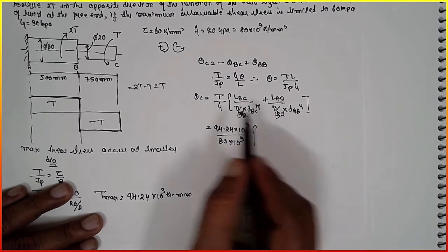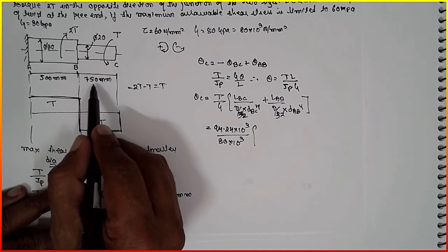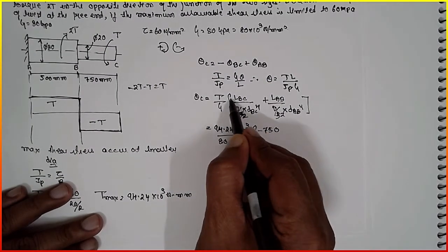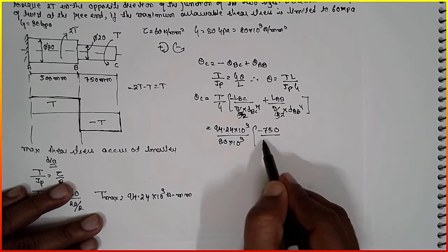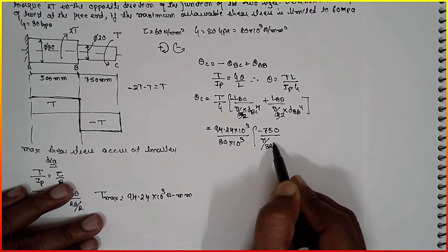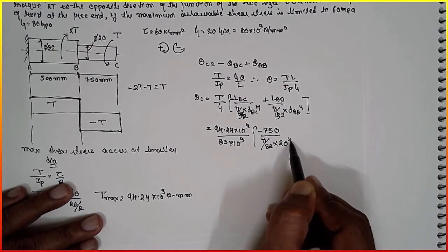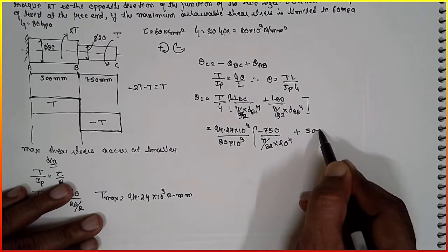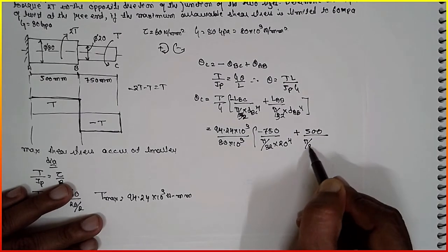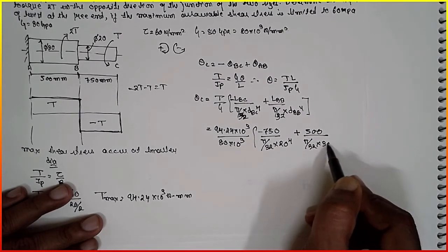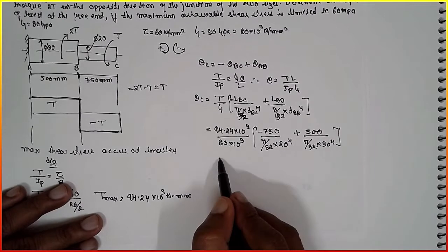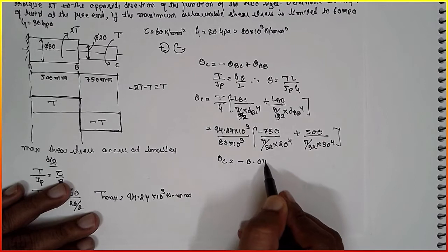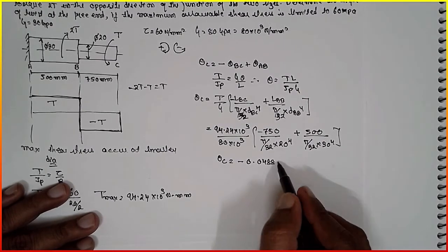LBC is 750 minus sign, it is minus sign, divided by pi by 32 into diameter 20 raised to 4, plus 500 divided by pi by 32 into 30 raised to 4. If you calculate, theta C will be minus 0.0488 radian.